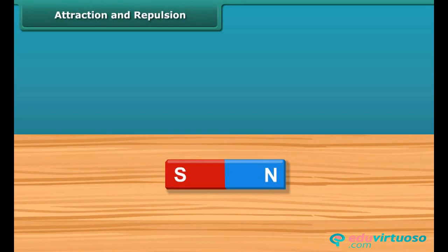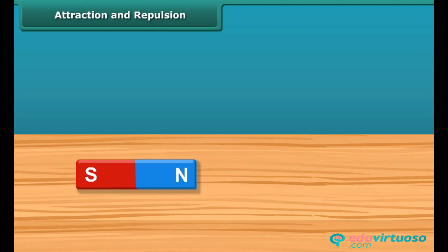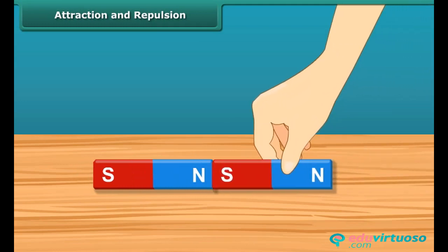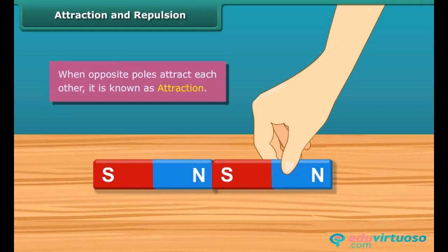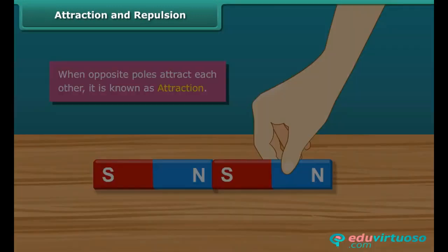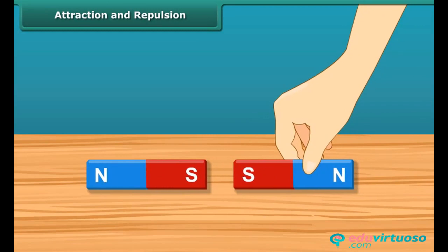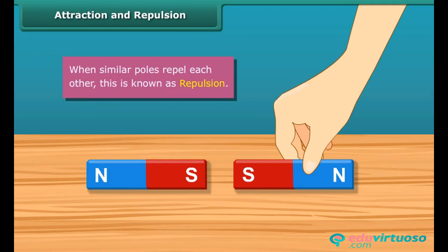Now that you know about poles of a magnet, let us look at the attraction and repulsion properties too. In the case of magnets, when the south pole comes in contact with the north pole, these get attracted to each other. This is better known as opposite poles attracting each other. Similarly, when the south pole comes in contact with another south pole of a magnet, they do not attract each other. In fact, they repel each other. This is better known as similar poles repelling each other.